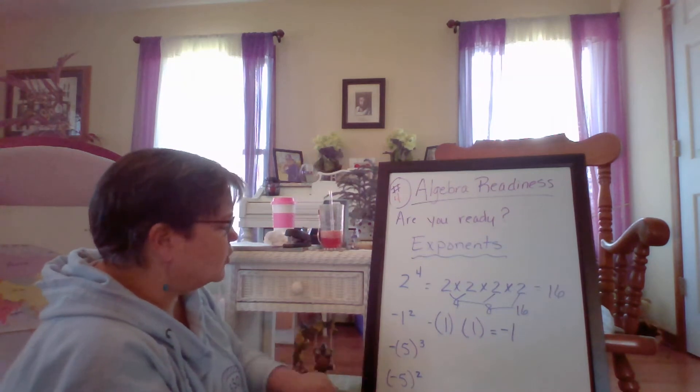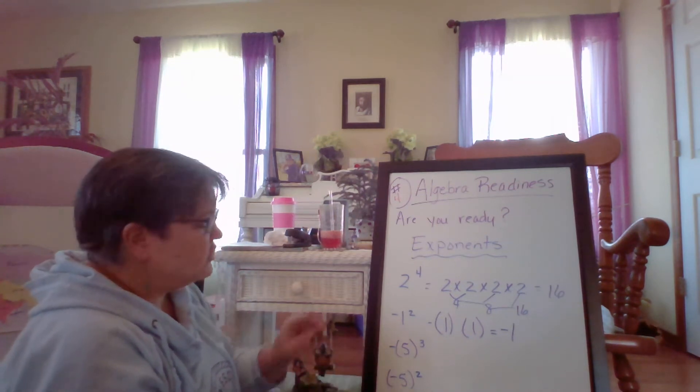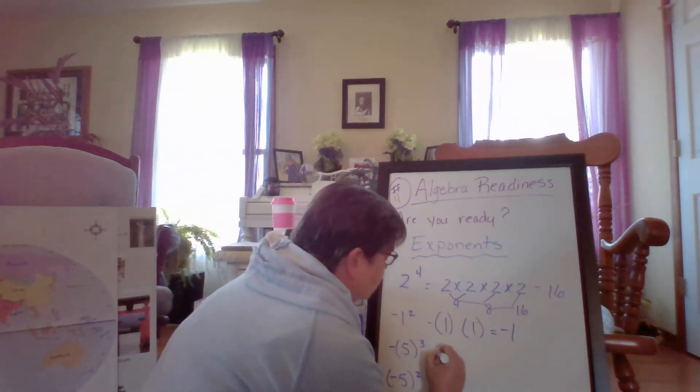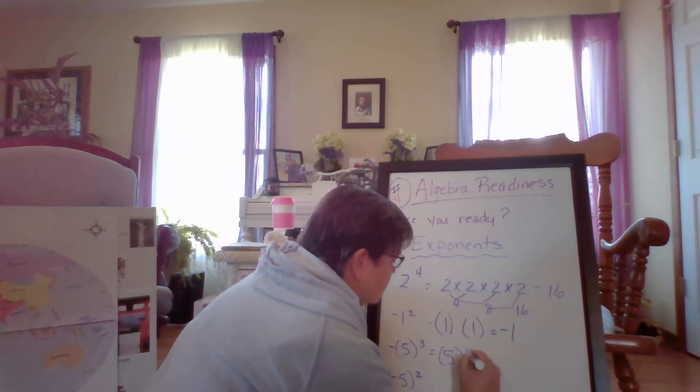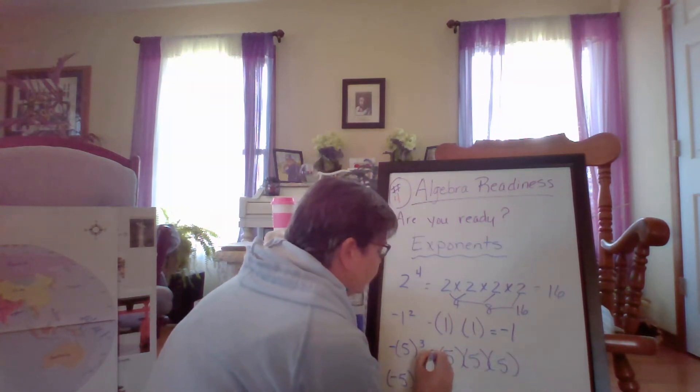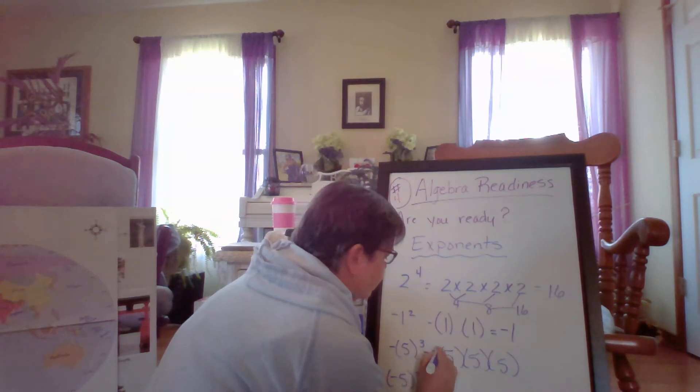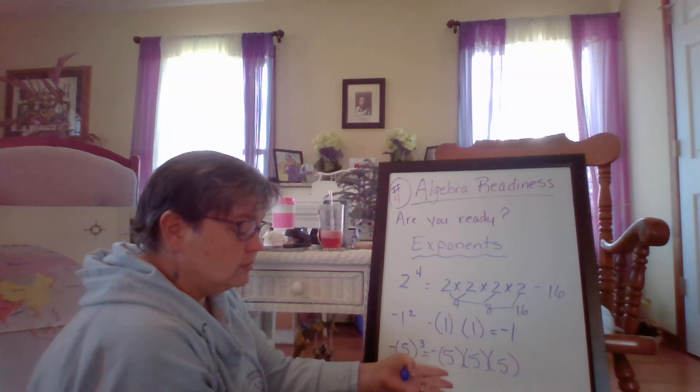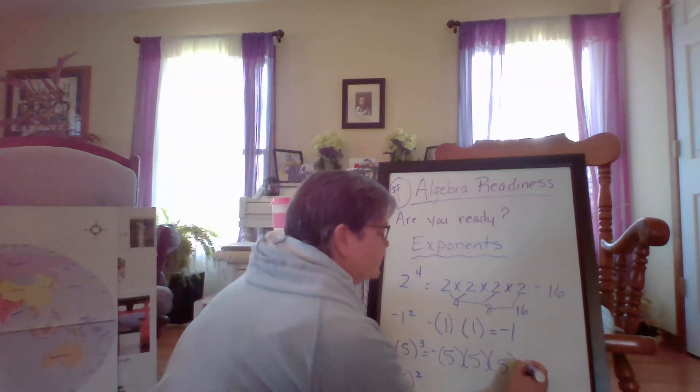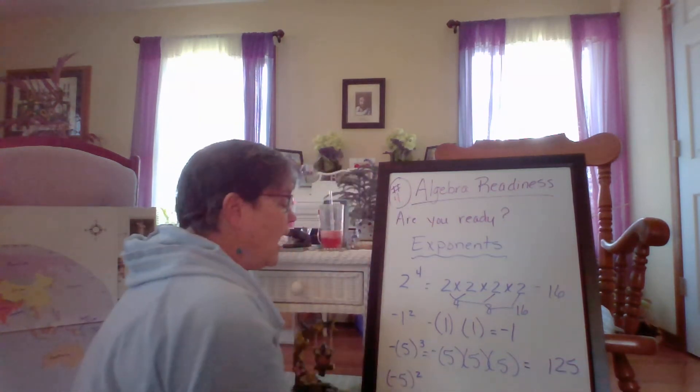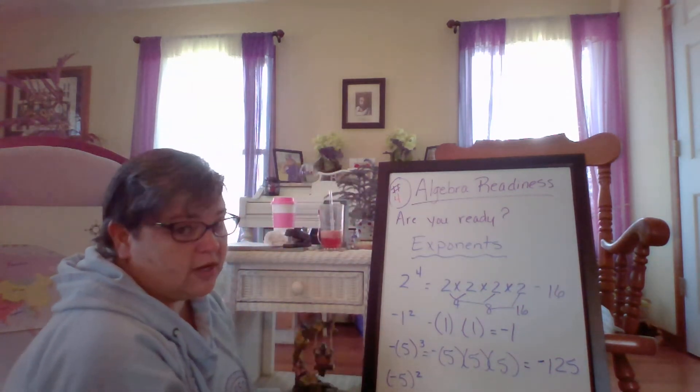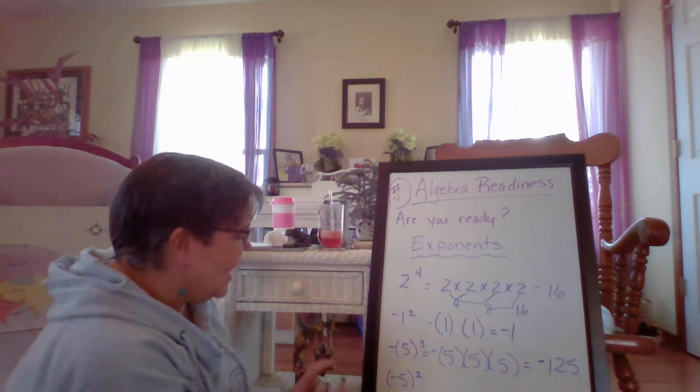So let's look at this one. You have a five in parentheses. So we're going to do five times five times five. All right, and you would say five times five is 25, and 25 times five is 125. And we're going to bring along our negative. So we have negative 125.